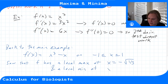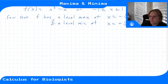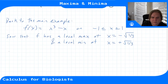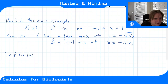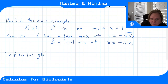To find the global (also called absolute) maximum and minimum, we need to compute f at the local extrema and at the endpoints, then compare all those values.